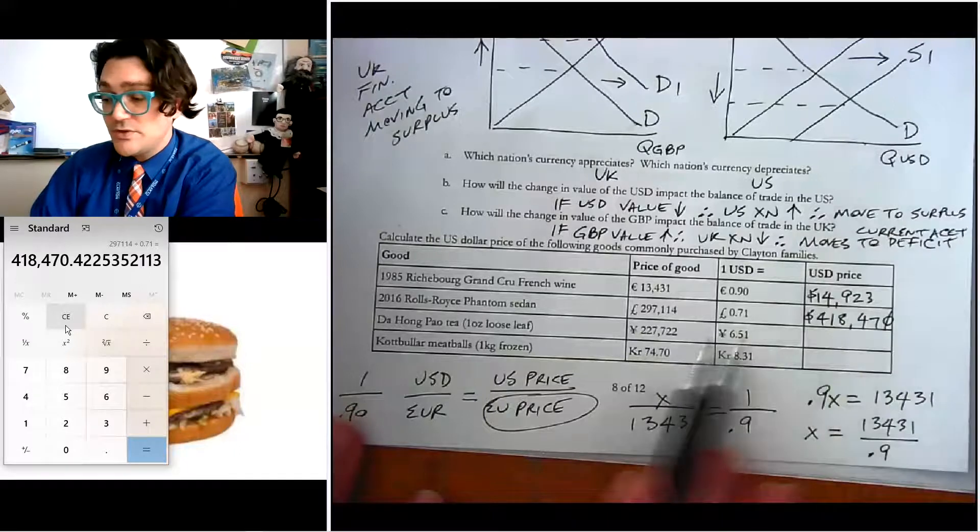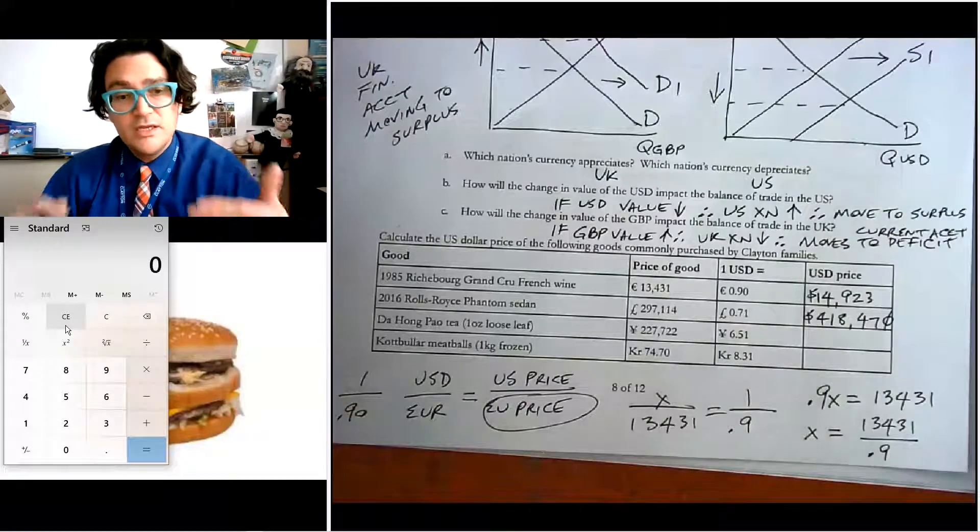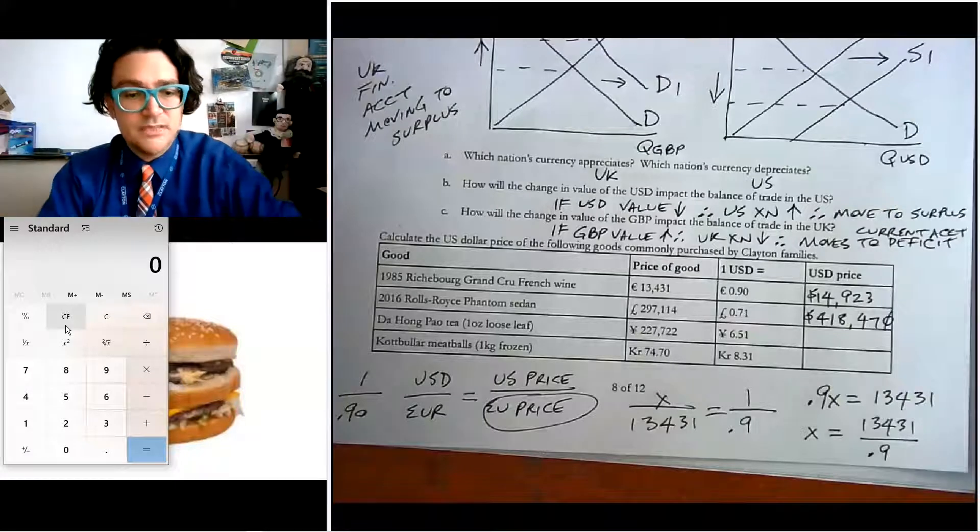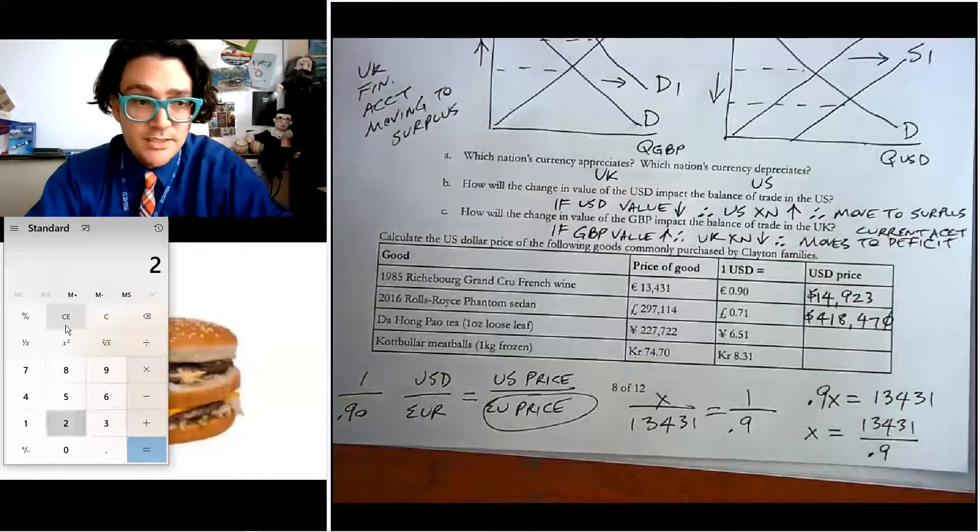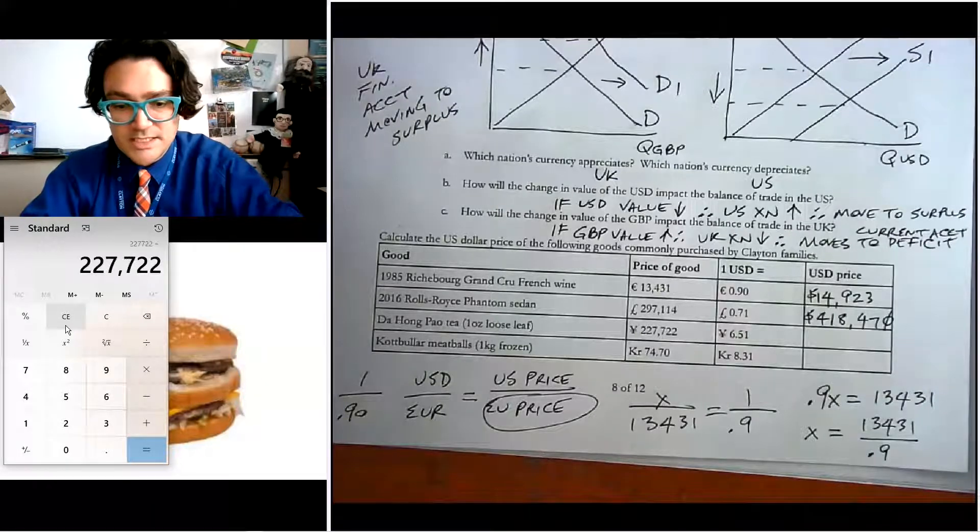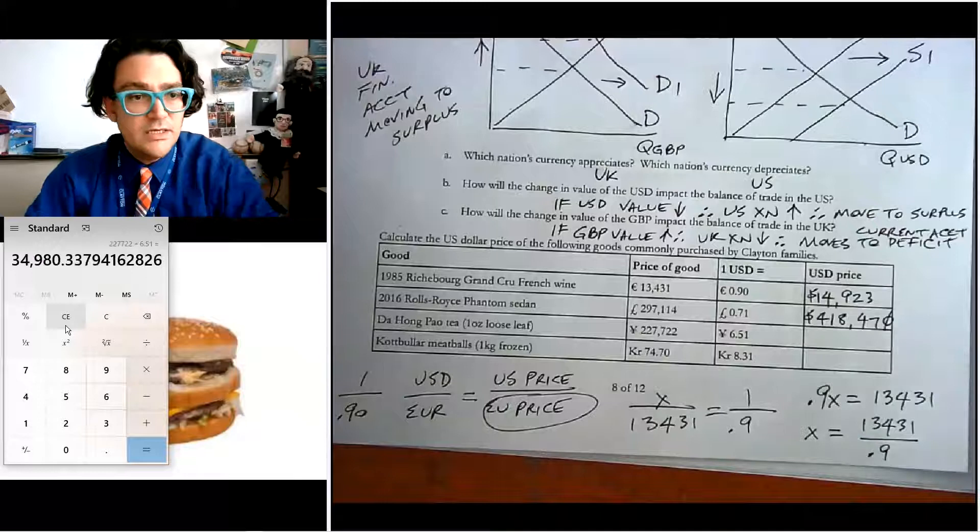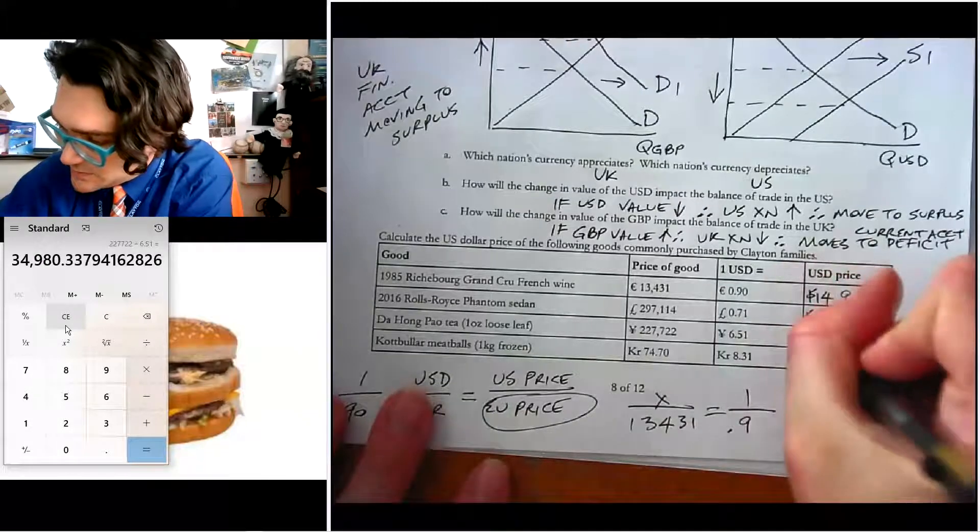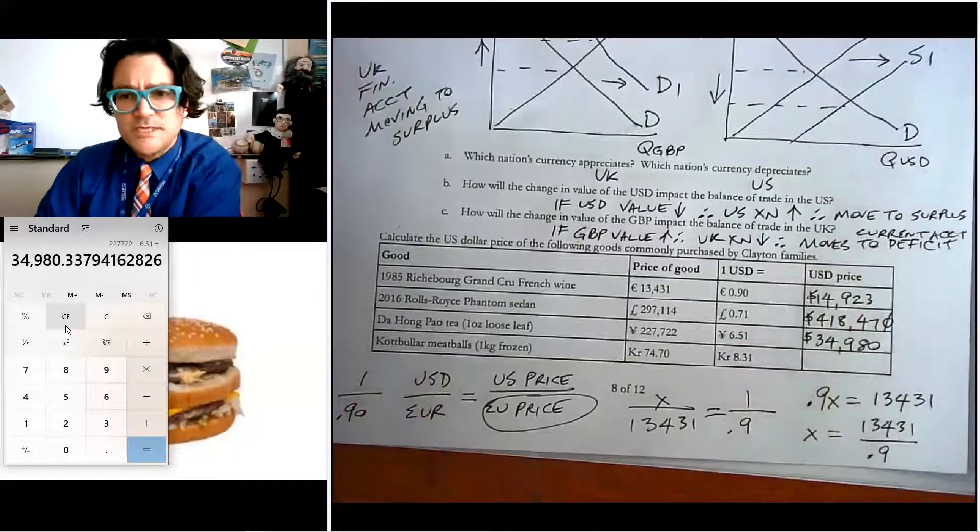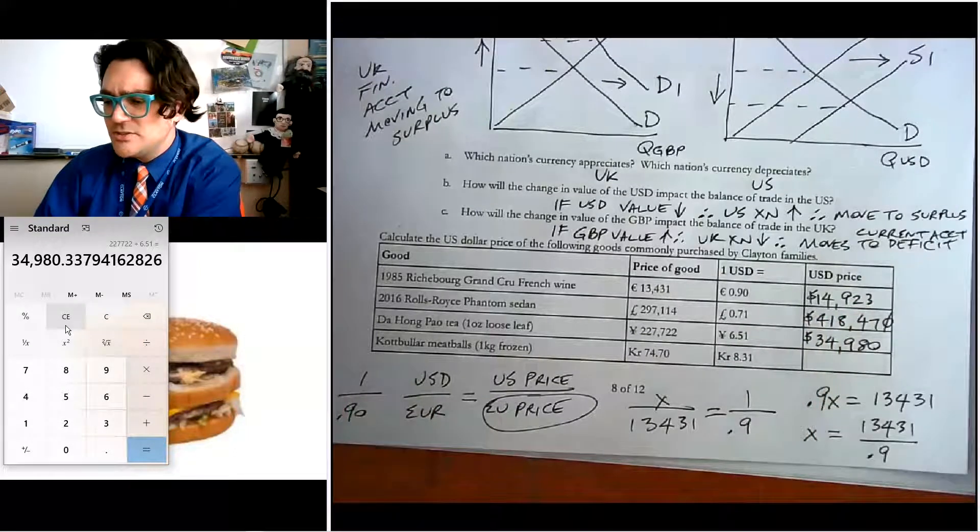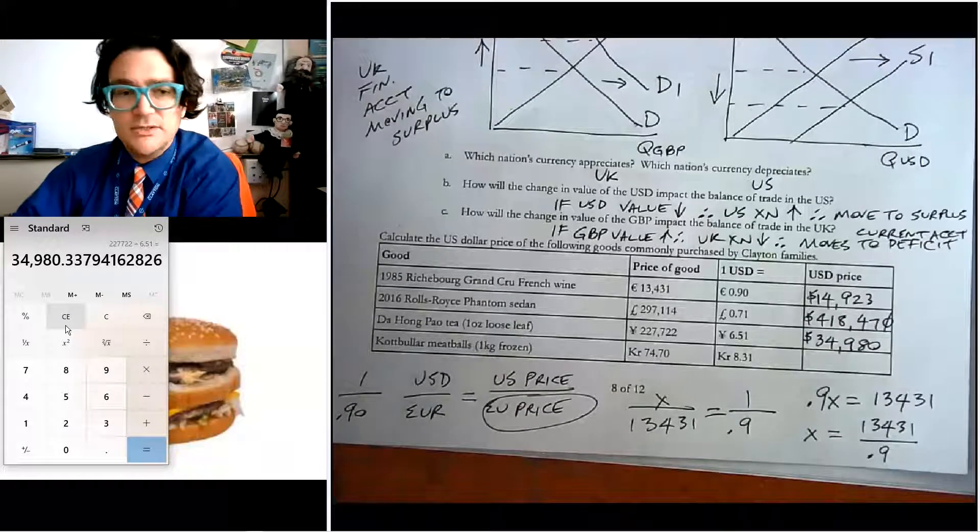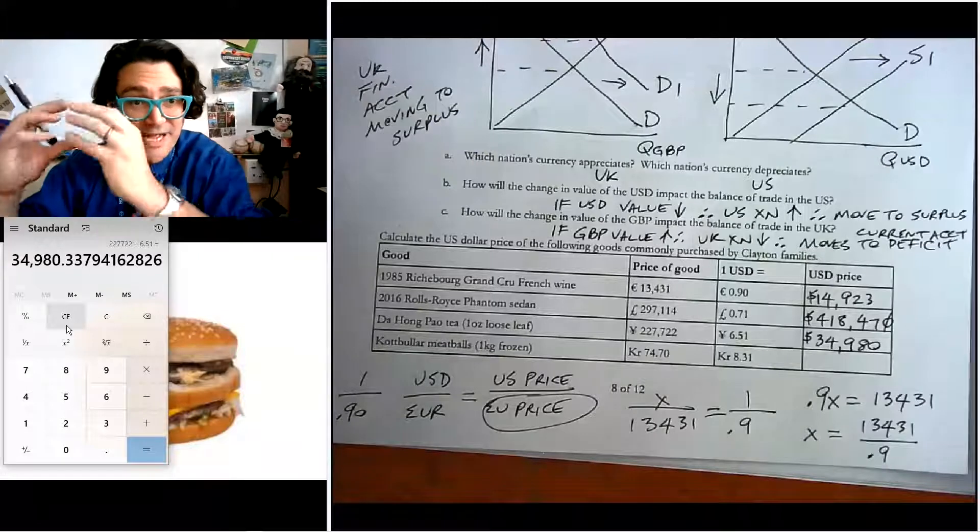And then now let's kind of, we're going to go the other way, but we're still going to use the same method. How much does a one ounce of dahong pao tea cost? So we know that it's 227,722 Chinese yuan divided by 6.51 is $34,980 per ounce. That's some expensive tea. My understanding is that this is some very fancy tea. I like tea, but I am not going to spend $35,000 on an ounce of tea, a little baggie of tea.